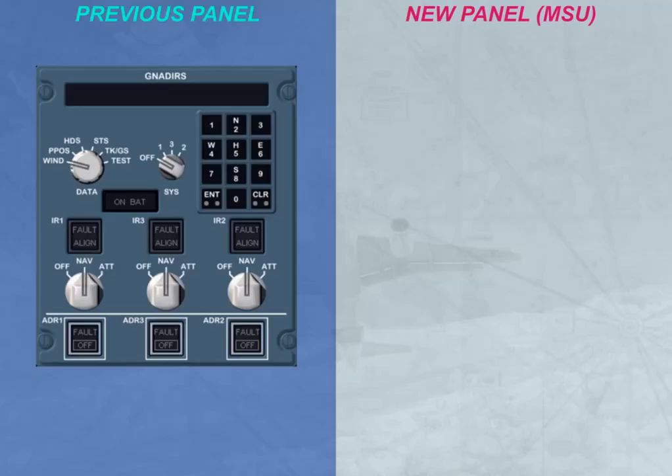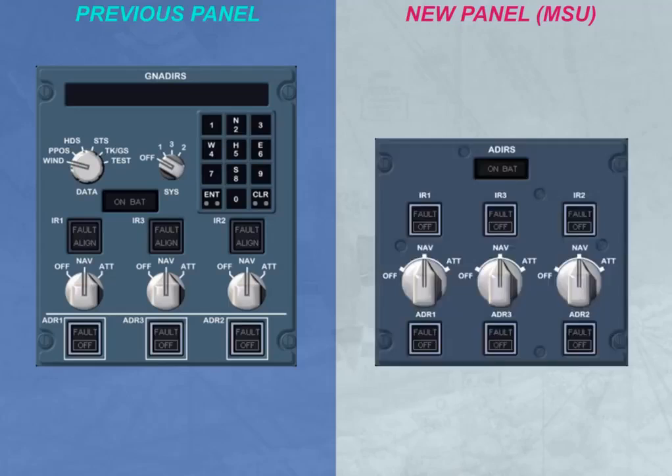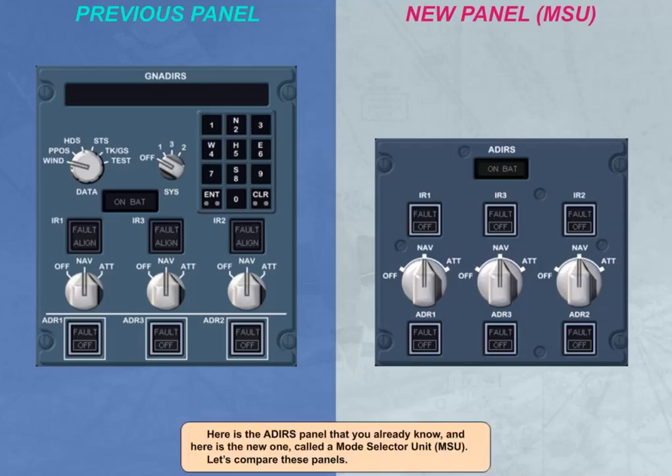Here is the ADIRS panel that you already know, and here is the new one, called a Mode Selector Unit or MSU. Let's compare these panels.